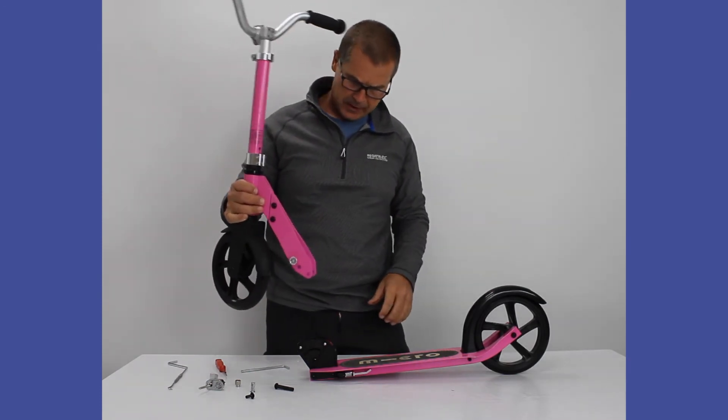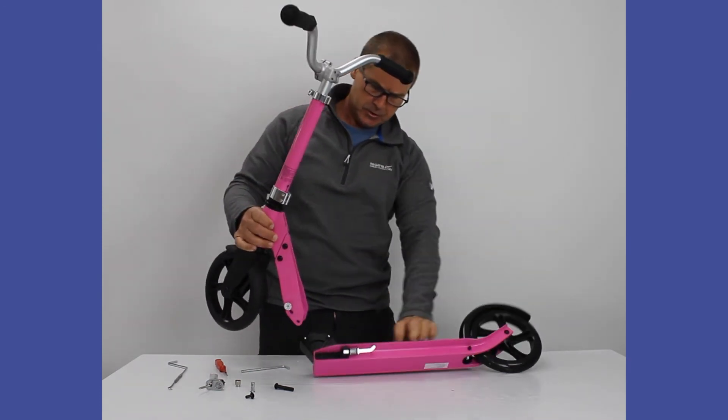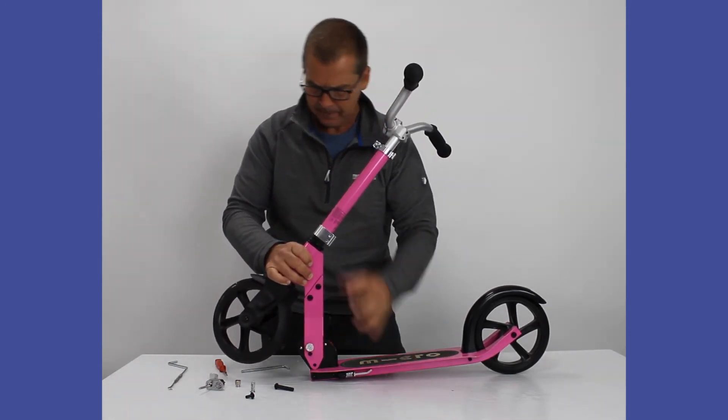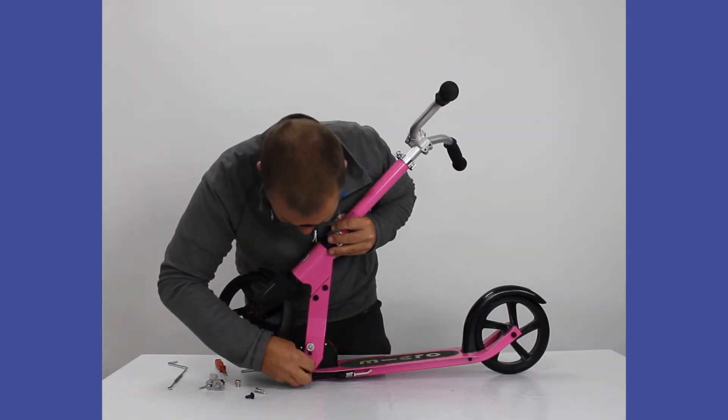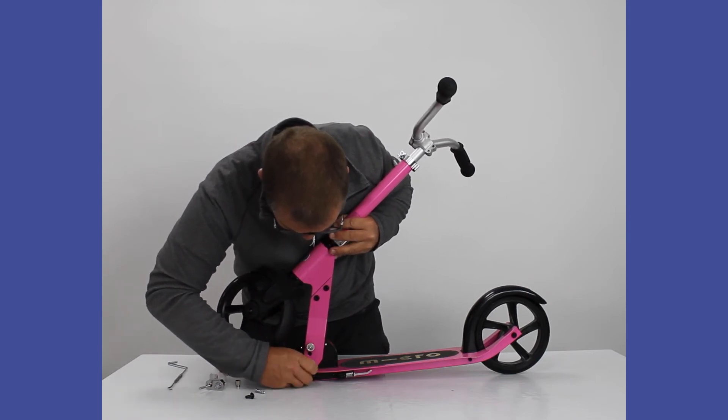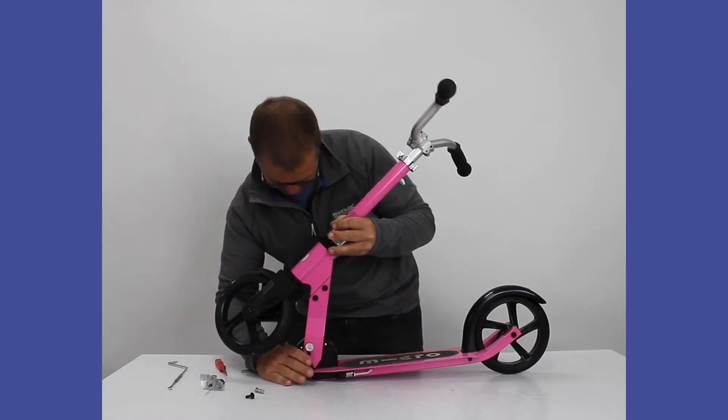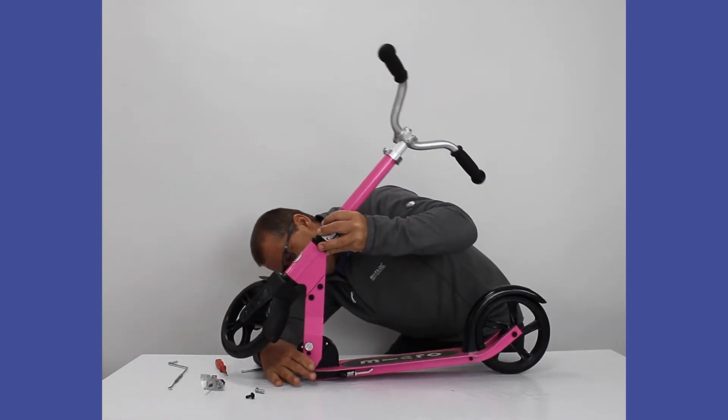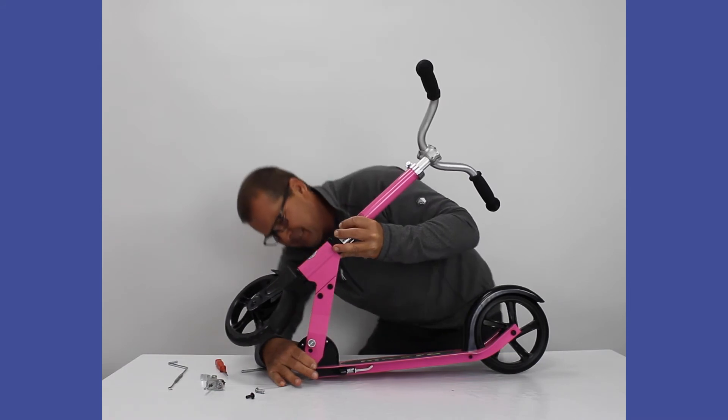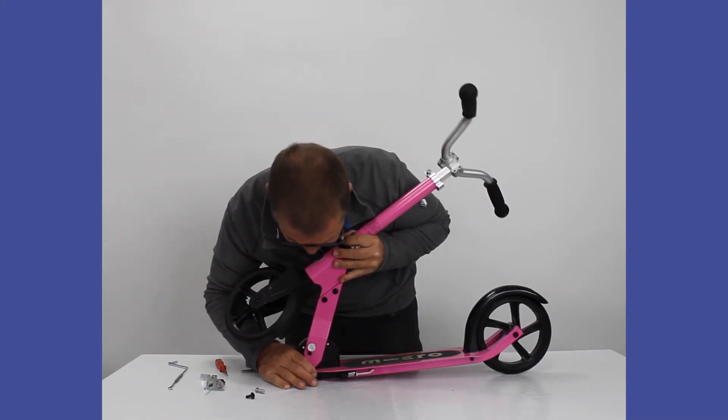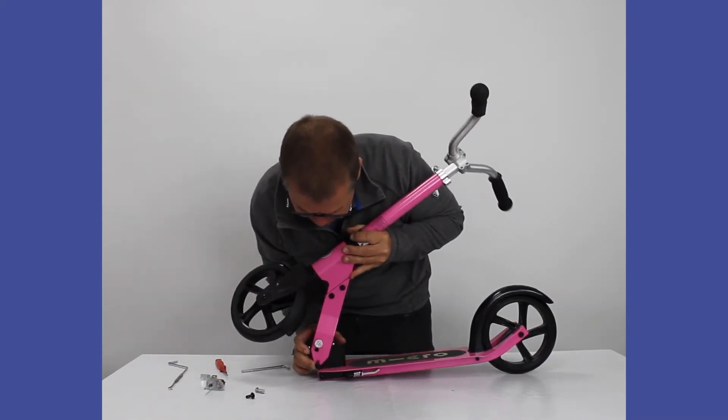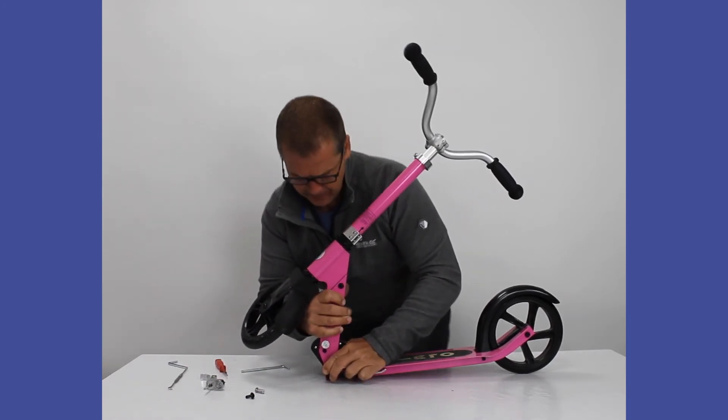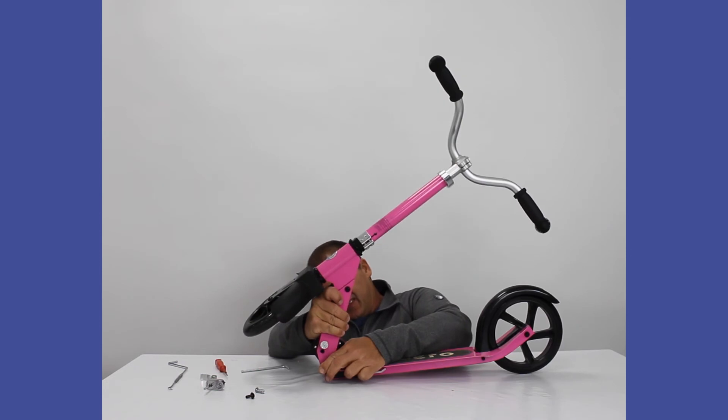Now we're going to put the stem back on the deck. Easiest way just to go straight down so we can find where this axle bolt goes in.